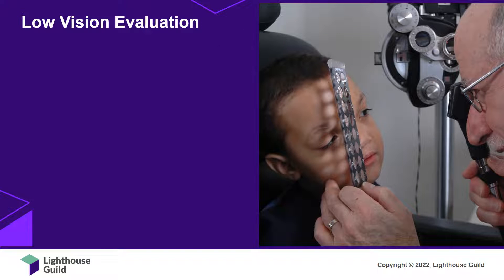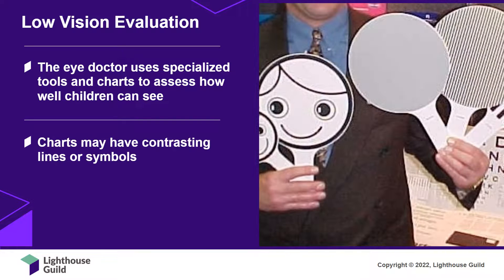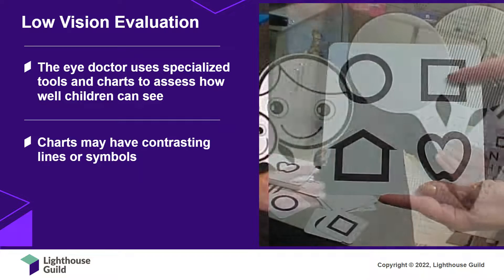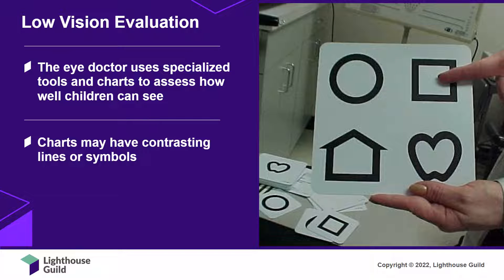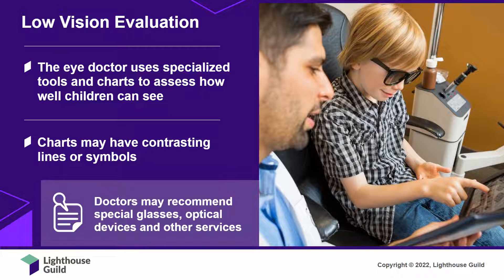In a low vision evaluation, the eye doctor uses specialized tools and charts to assess how well children can see. Depending on the child's age and level of cognition, the charts may have contrasting lines or symbols instead of the letters and number charts typically used in adult vision exams. Based on the results, the doctor may recommend special glasses, optical devices, and additional services for both children and their parents.